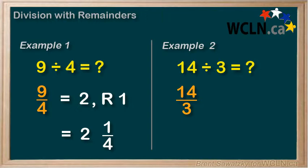3 times 4 equals 12. So we can say that 3 goes into 14 four times, which leaves a remainder of, think about it, right, 2. So we could say that 14 divided by 3 equals 4 with a remainder of 2.